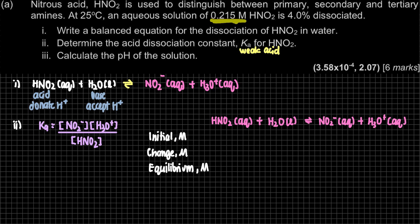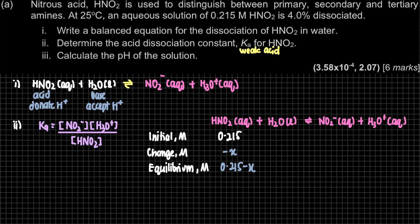The initial concentration of HNO2 is 0.215 M. The change for the reactant will be minus X (since the stoichiometric coefficient is 1). For H2O, it is liquid so we don't include it — concentration remains constant, that's why K only applies to gas and aqueous. For the products NO2⁻ and H3O⁺, the initial concentration is 0. The change will be positive X because product concentration increases. The equilibrium values are: HNO2 = 0.215 − X, NO2⁻ = X, H3O⁺ = X.